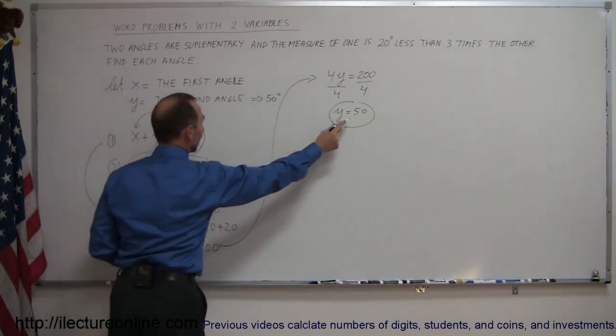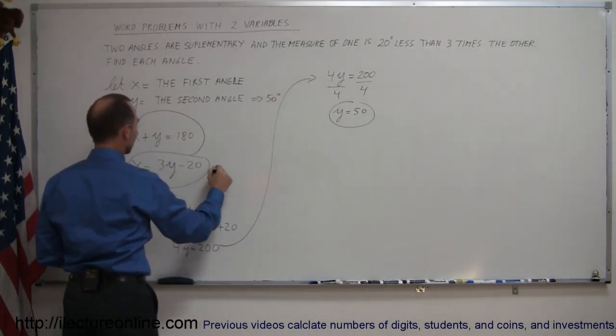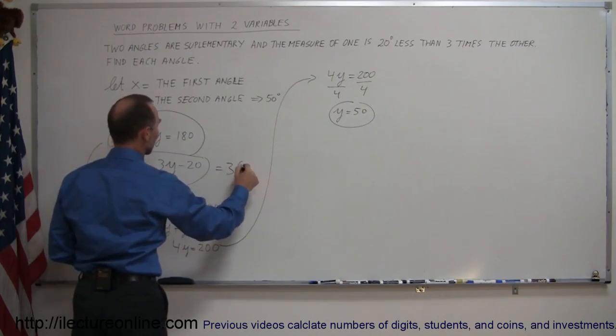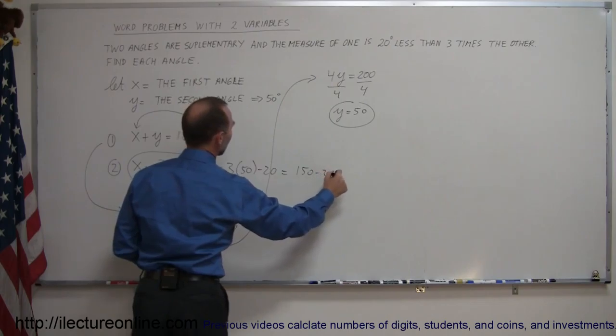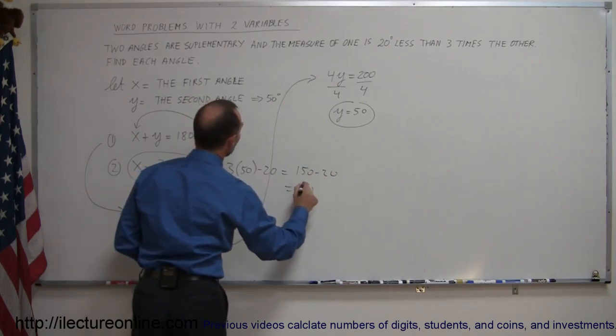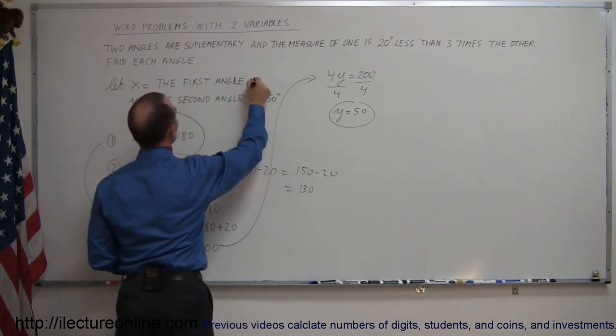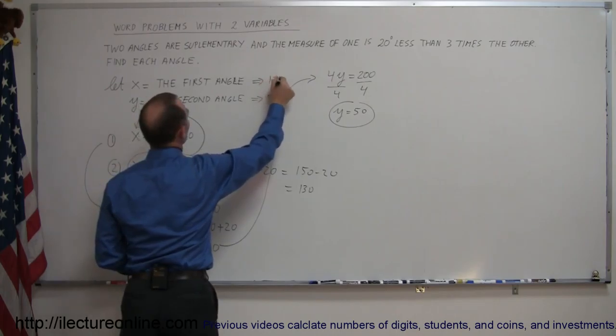I can say, alright, plug y equals 50 into my equation here. So this is equal to 3 times 50 minus 20, which is equal to 150 minus 20, which of course is equal to 130, which means the first angle I chose has to be 130 degrees.